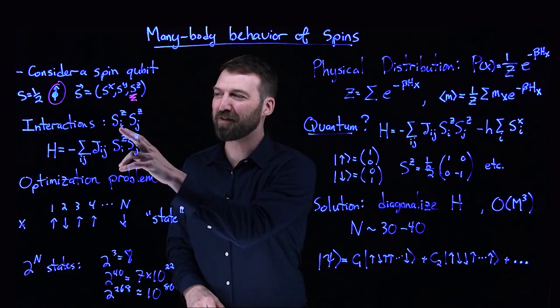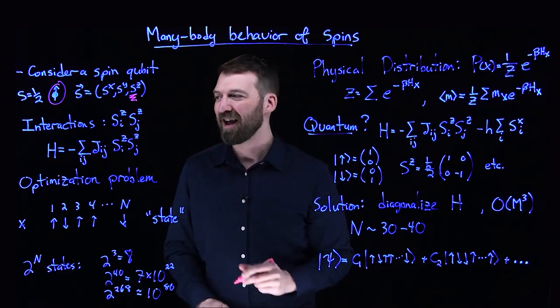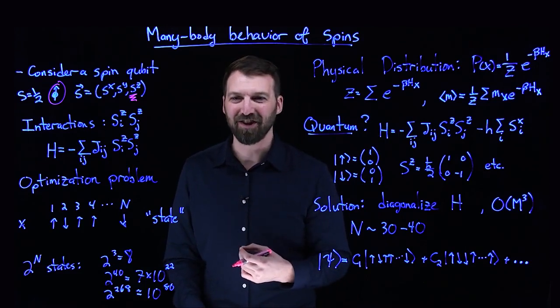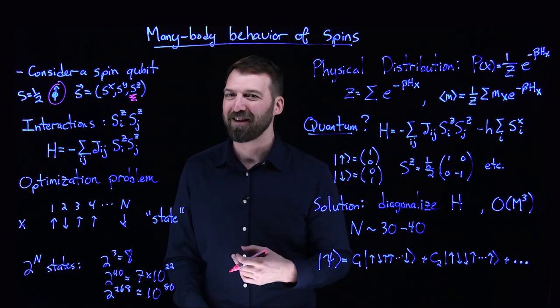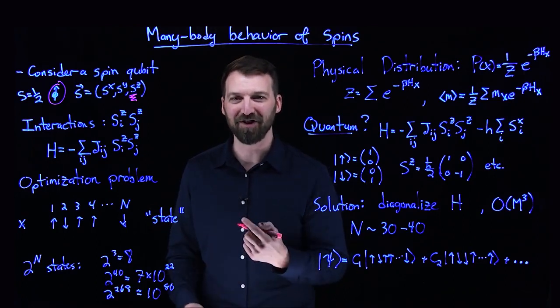That interaction could be, for example, SiZ·SjZ, and I could form a Hamiltonian, which is the fundamental object that governs all the time evolution in the Schrödinger equation.